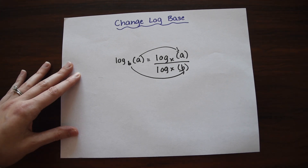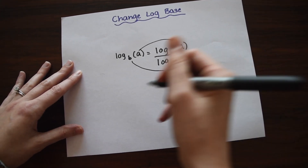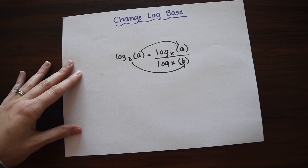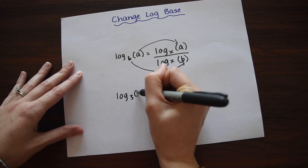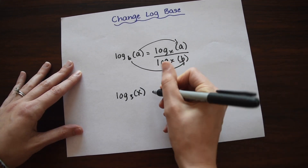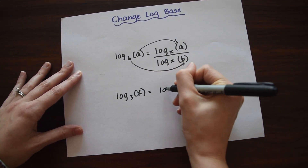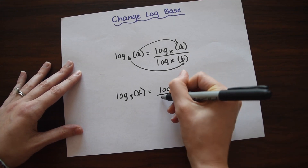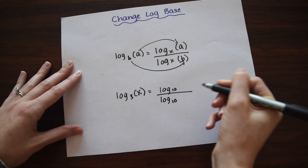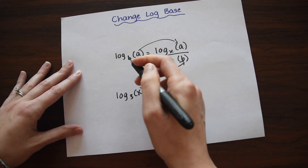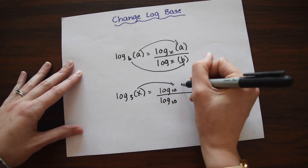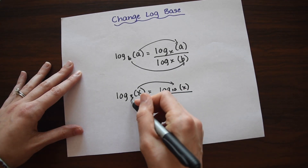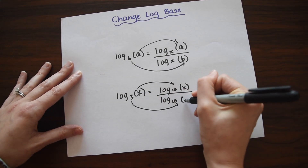Let's look at an example. Let's say we wanted to change the base from log base 3 to log base 10. So we have log base 3 of x, but we want log base 10. We're going to write log base 10 over log base 10, and then just follow the pattern from our formula up here — so x goes up here and the 3 goes in the argument down here.